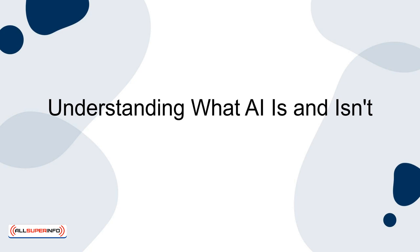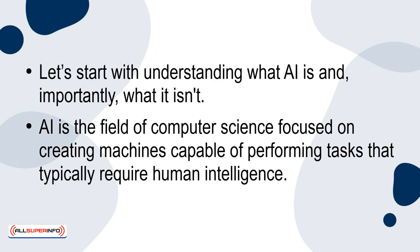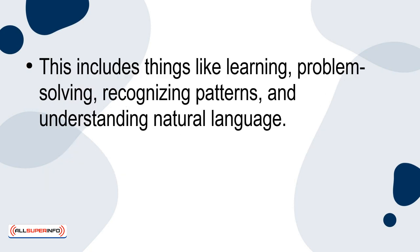Let's start with understanding what AI is and, importantly, what it isn't. AI is the field of computer science focused on creating machines capable of performing tasks that typically require human intelligence. This includes things like learning, problem solving, recognising patterns, and understanding natural language.